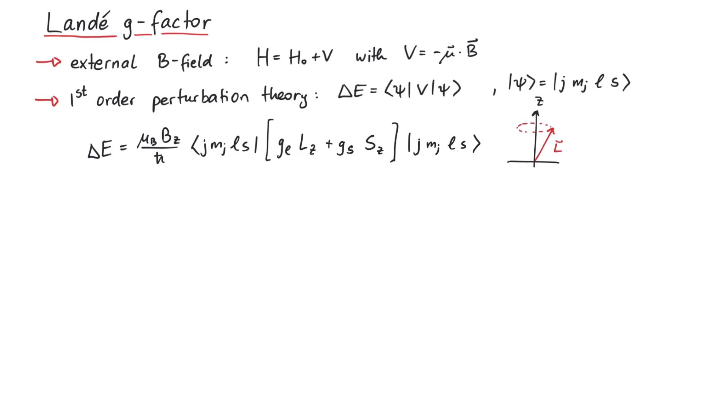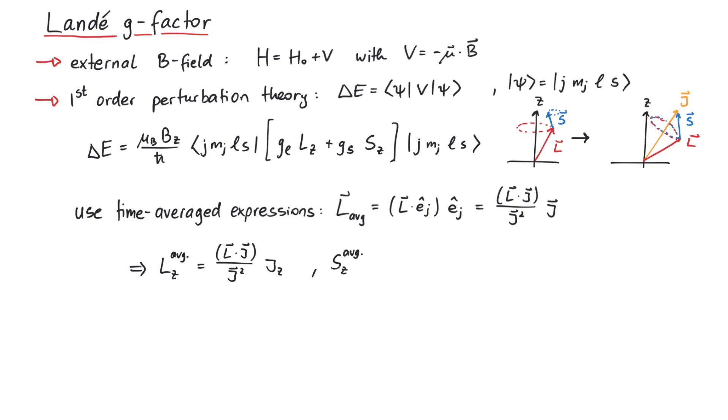However, lz and sz do not have well-defined eigenvalues anymore, since they are now coupled to the total angular momentum j. So instead of l and s, we can use their time-averaged expressions, which means first projecting them onto the direction of j, and then multiplying this quantity with a unit vector in the direction of j. Since this unit vector is just j divided by its length, we can also write those expressions like this. The reason why we might do this is that we can now evaluate the operators inside the bracket expressions by replacing the inner products of j times l and j times s like in the previous derivation.